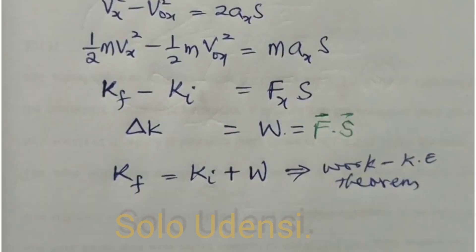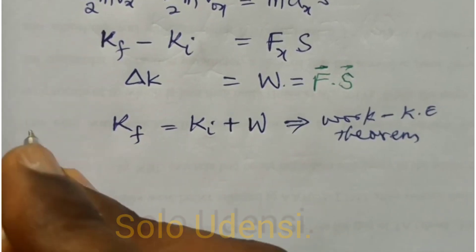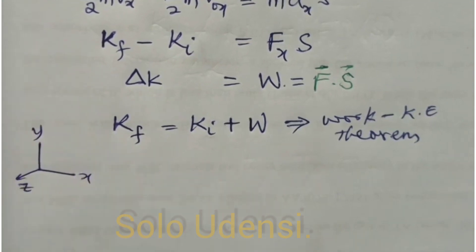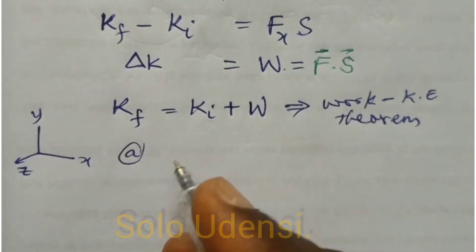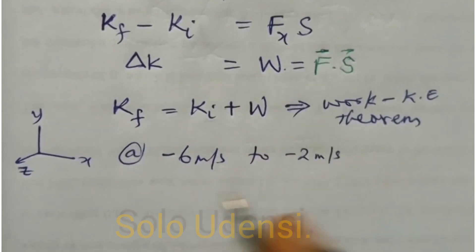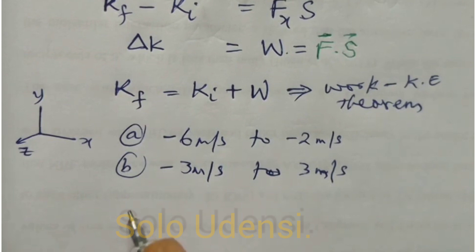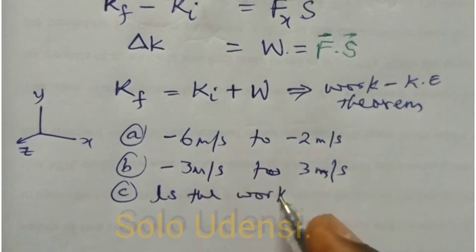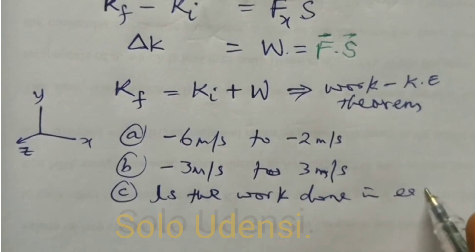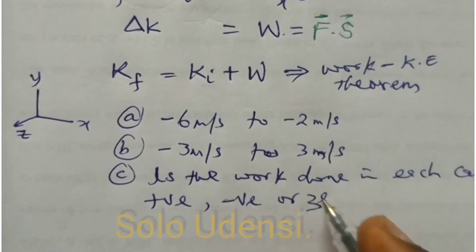As an example, we can say that the velocity of a particle moving along the X axis changes from (a) minus 6 meters per second to minus 2 meters per second and (b) from minus 3 meters per second to 3 meters per second. We can be asked to see is the work done in each case positive, negative or zero.